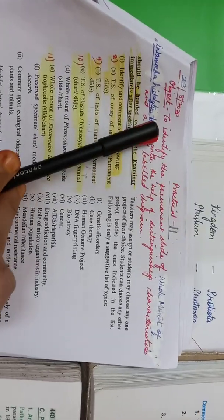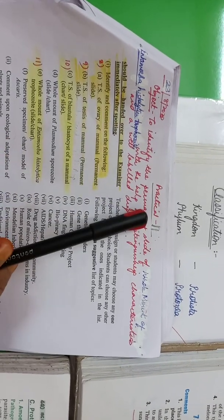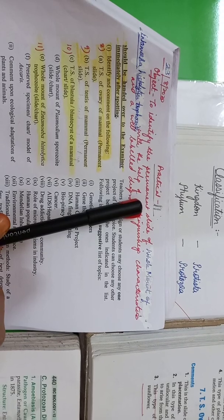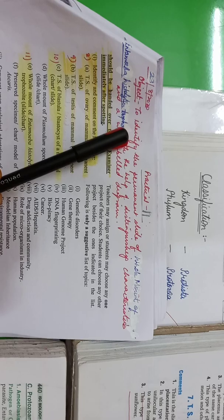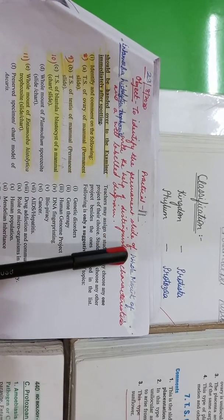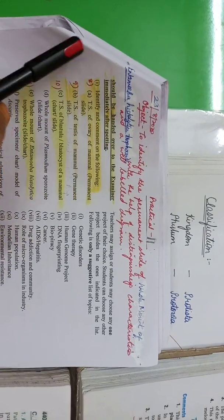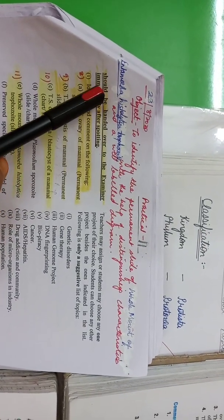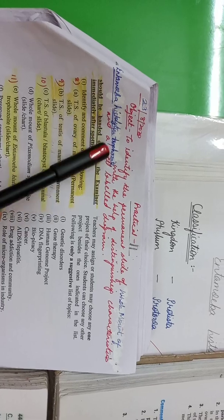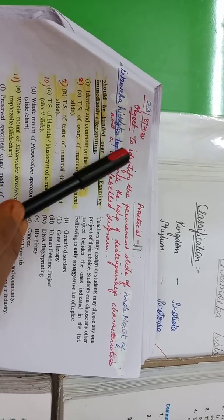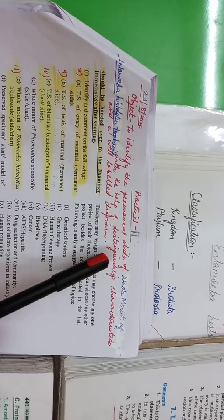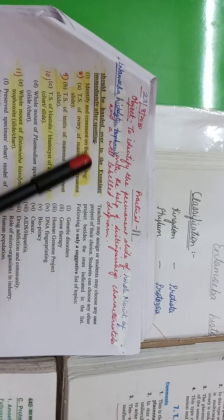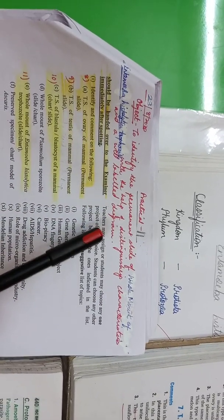So on a new sheet, you will write down today's date, 23rd of August, practical number as usual in pencil because this would be changing towards the end while making index. The object in black color to identify the permanent slide of whole mount of Entamoeba histolytica. This is a scientific term so you will underline. Entamoeba histolytica trophozoid. Trophozoid we will not underline because this is the infective stage of the organism with the help of distinguishing characteristics and a well labeled diagram.